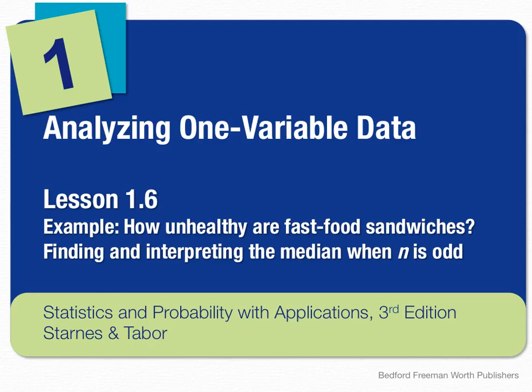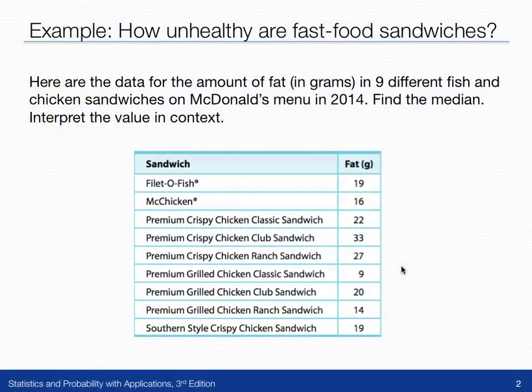In the lesson 1.6 example, 'How Unhealthy Are Fast Food Sandwiches,' we're going to find and interpret the median when n, the number of items in the data set, is odd. Here's the data for the amount of fat in grams from nine different fish and chicken sandwiches off the McDonald's menu from 2014.